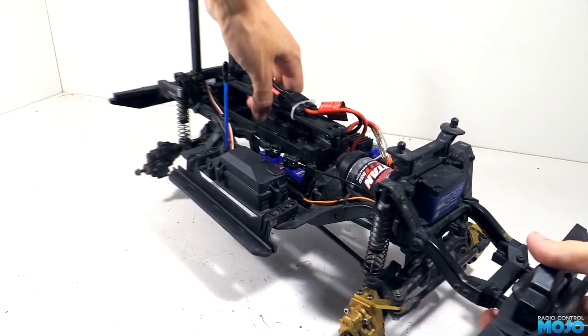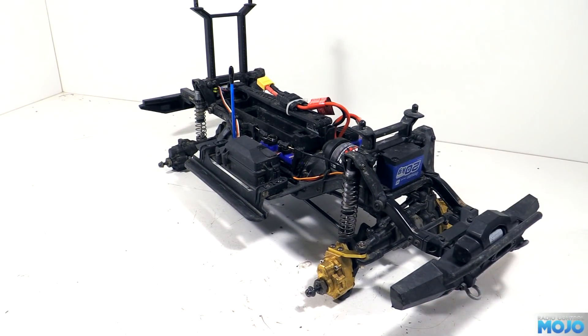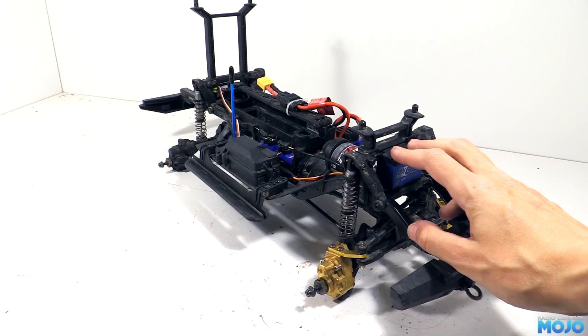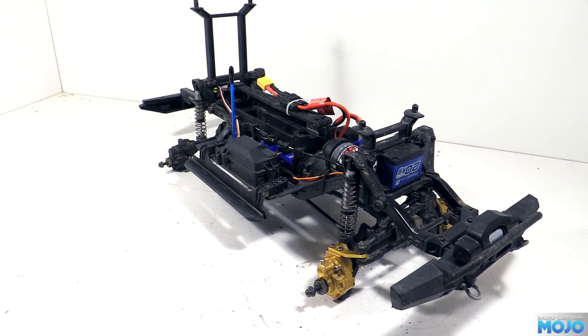Alright guys, welcome to RC Mojo. Last week we fitted the Power HD 20kg servo to the TRX4, which did seem to be making the BEC in the Traxxas ESC struggle a bit. So this week we're going to have a look at some different BEC installs.